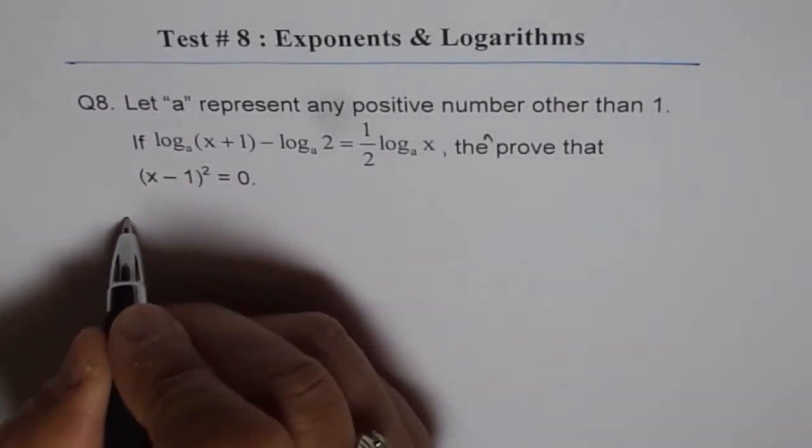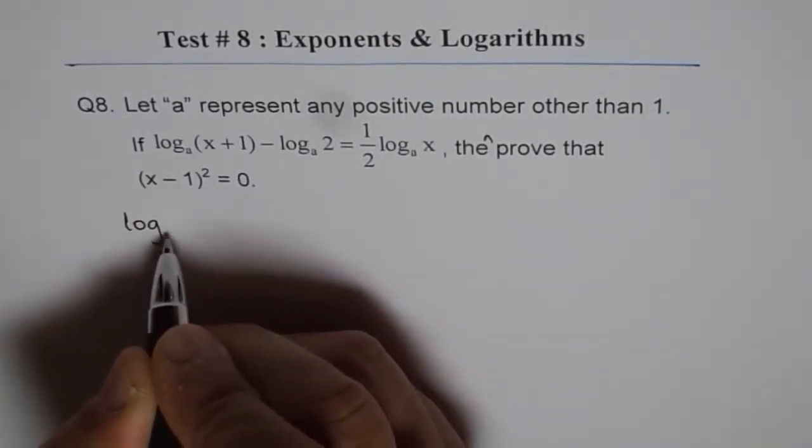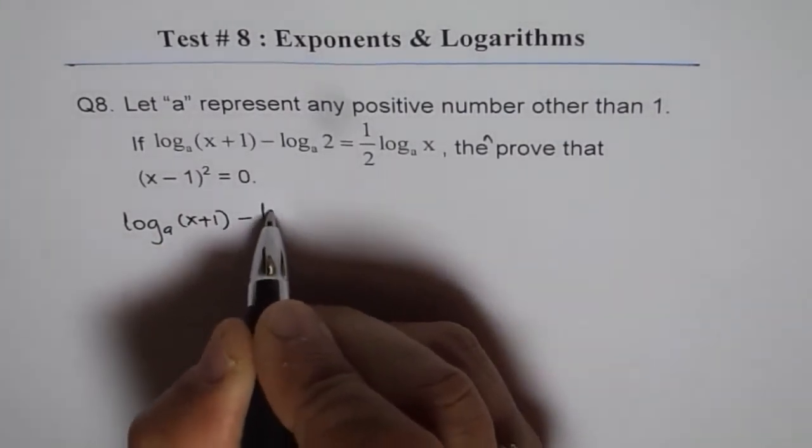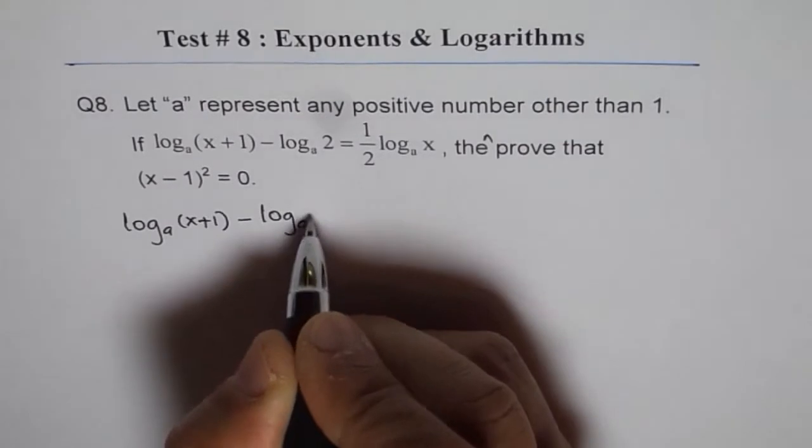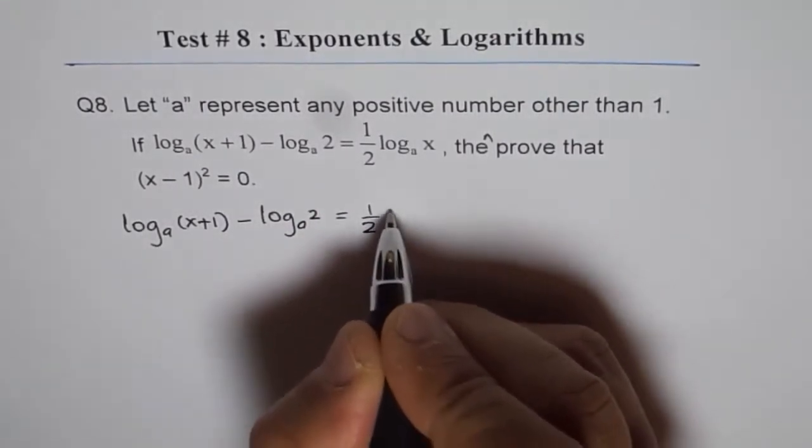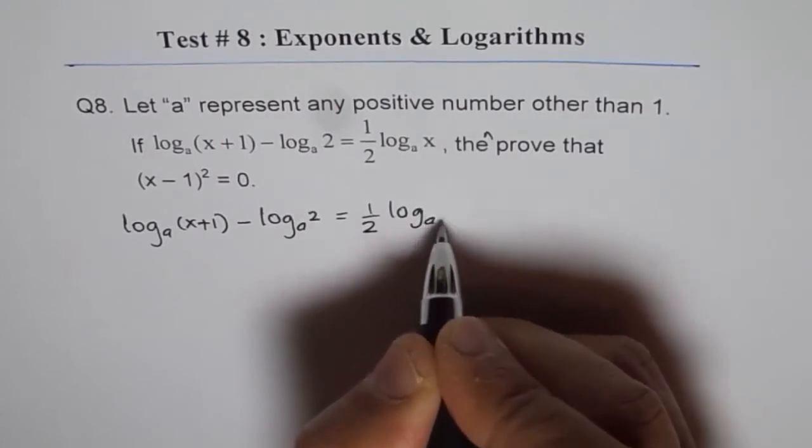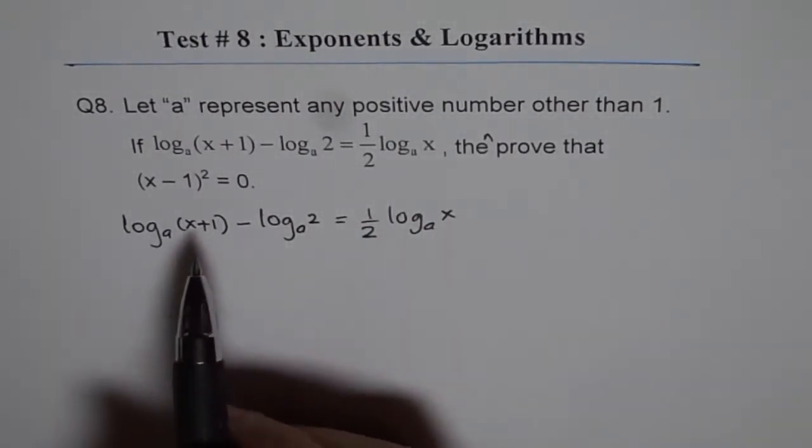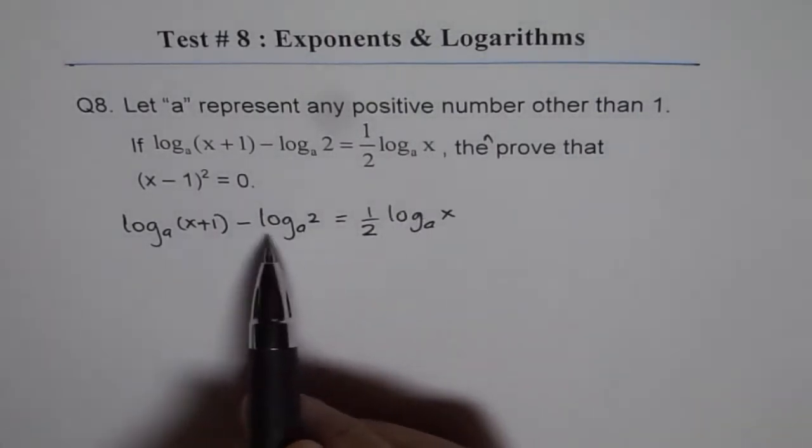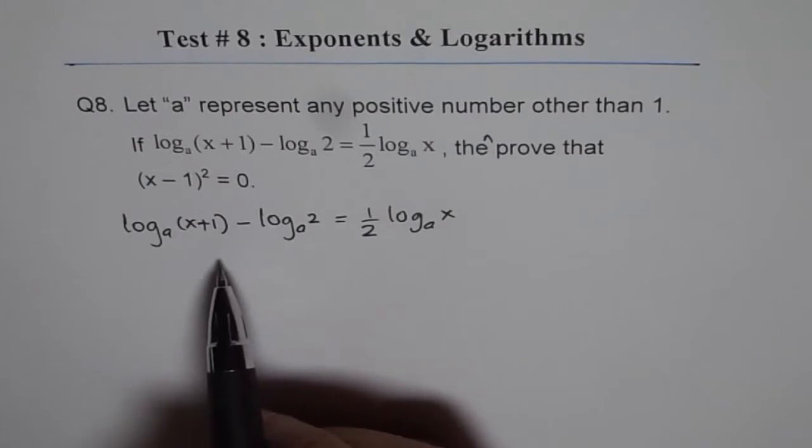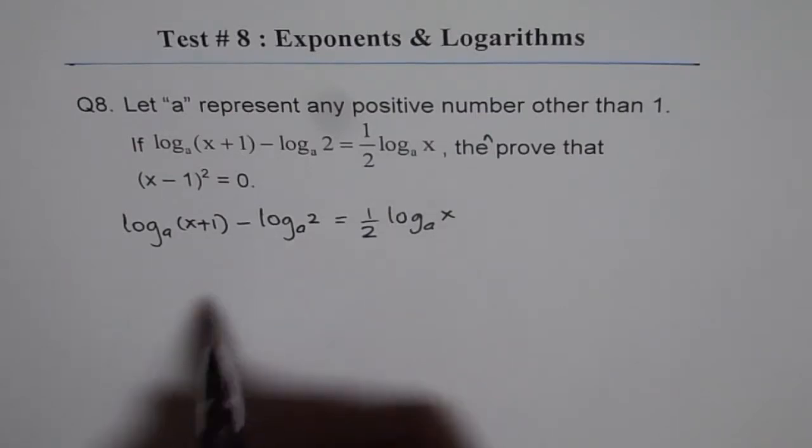So we have log A of x plus 1 minus log A of 2 equals half of log A of x. Now we can bring all these terms to one side and then write it as one logarithm. So let's do that.